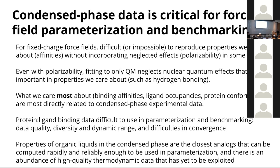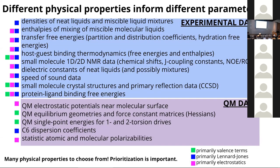The experimental data is free, in a structured format, and accessible to computers and humans. Different kinds of data inform different classes of parameters or different classes of the interaction potential in different ways. We're working on prioritizing how we tackle these while still allowing independent researchers to explore how to bring different data sources into our parameterization scheme and ensuring everything is modular enough to work together for joint parameterization.